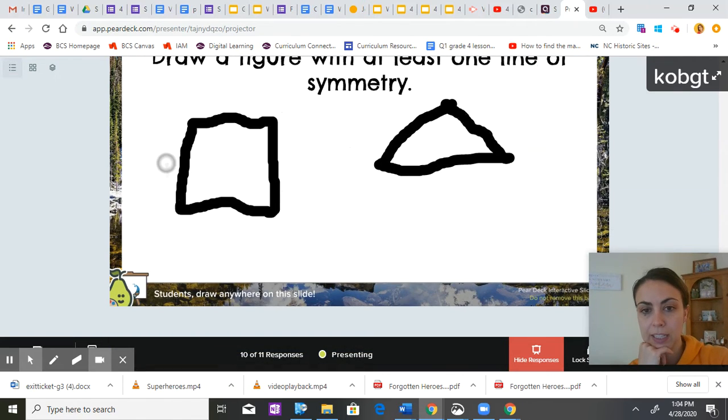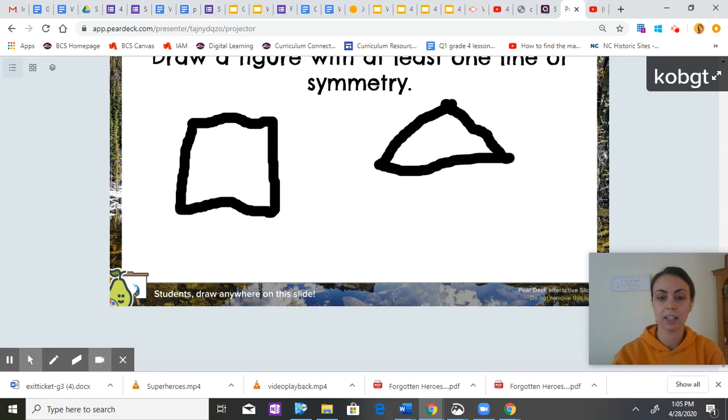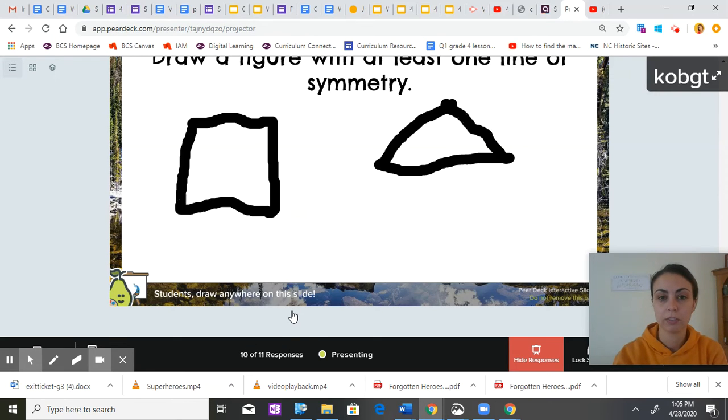So just looking through these at the lines of symmetry. So all of those shapes have at least one line of symmetry. Let's move on.